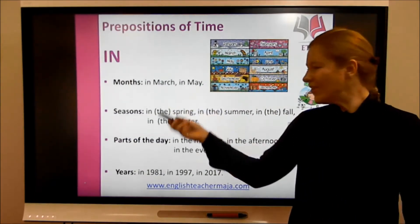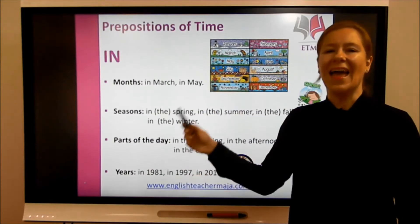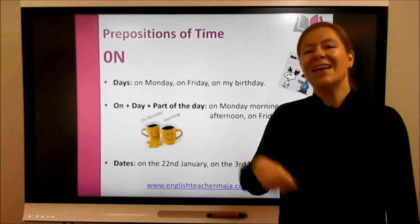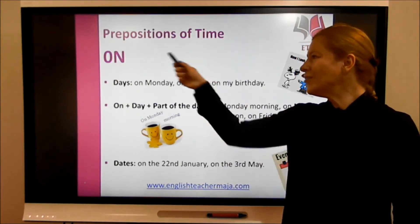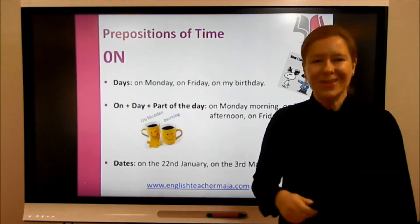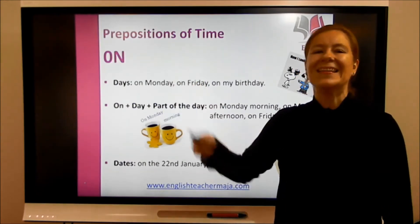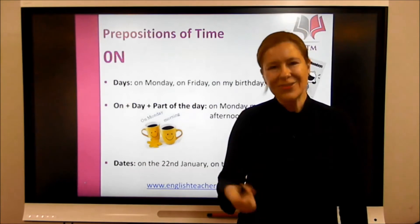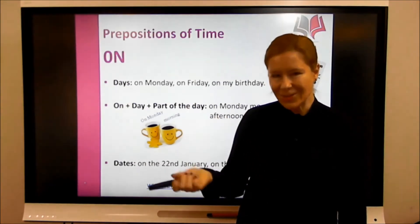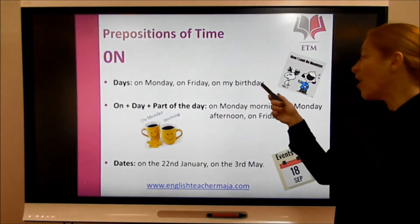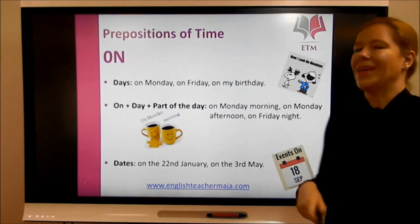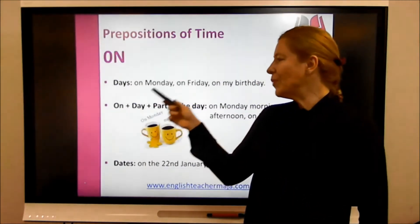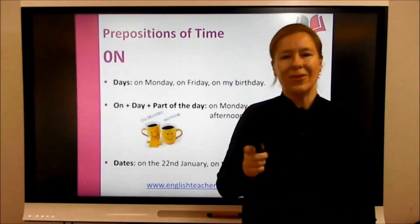So to summarize 'in': months, seasons of the year, parts of the day, and years. Now 'on' is the second preposition. We use 'on' for days — for example, on Monday, on Tuesday, on Wednesday, and so on. We can also say on my birthday.